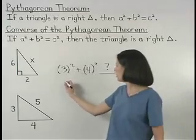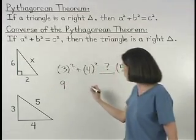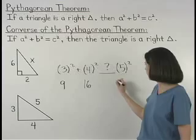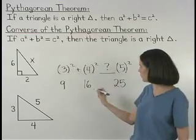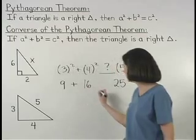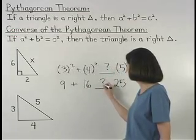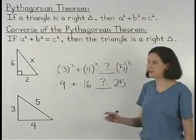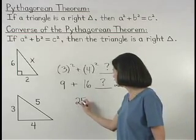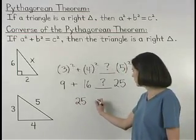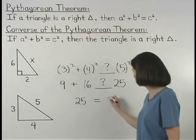3 squared is 9, 4 squared is 16, and 5 squared is 25. So we have 9 plus 16 equals 25. 9 plus 16 is 25, so we can see that 25 equals 25.